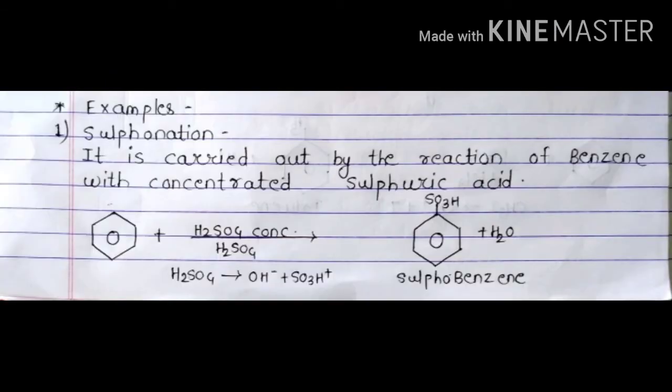There are five examples of it. We will see them in detail. First is sulfonation. It is carried out by the reaction of benzene with concentrated sulfuric acid.